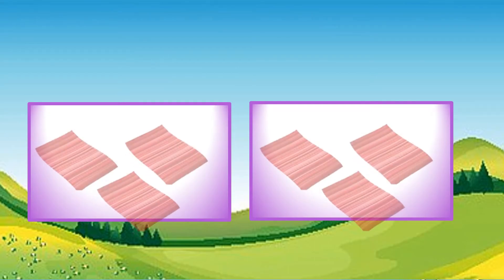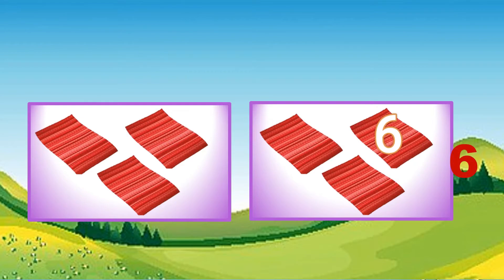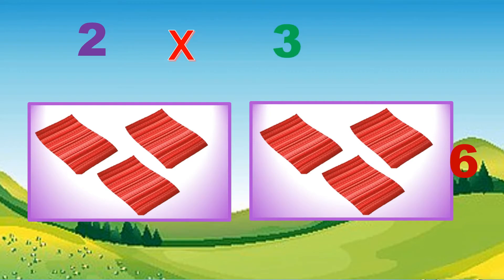Two sets of three. Skip counting: three, six. Two times three equals six.